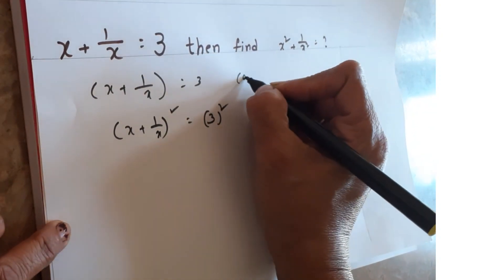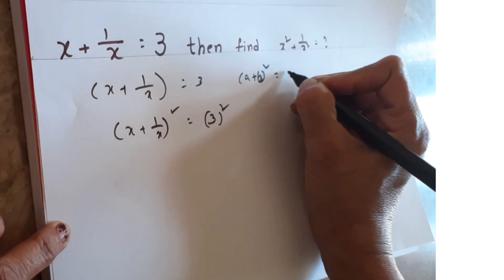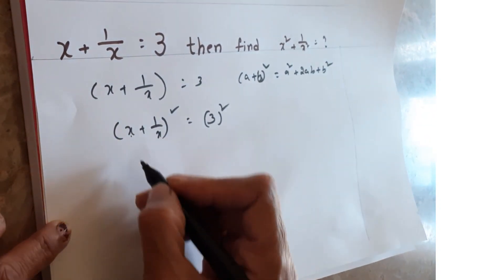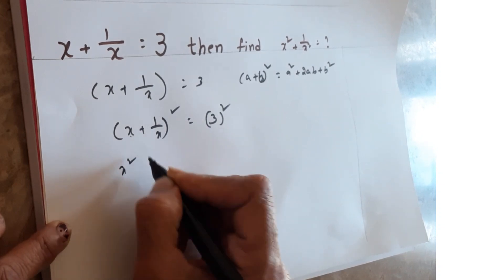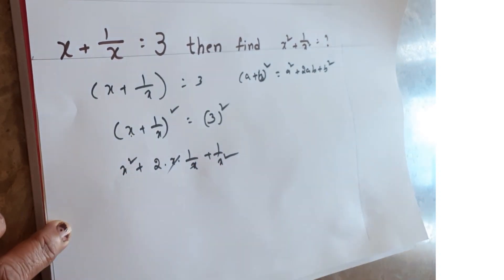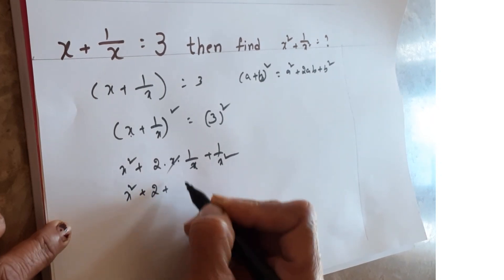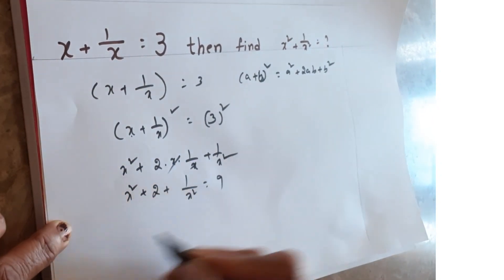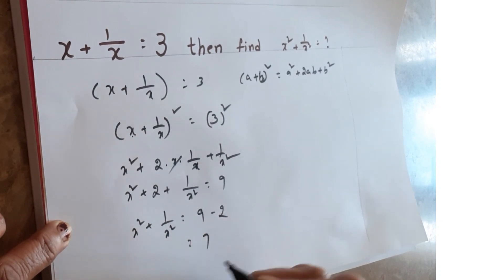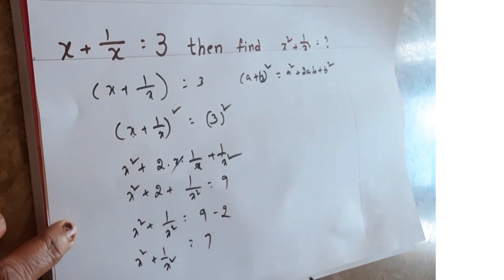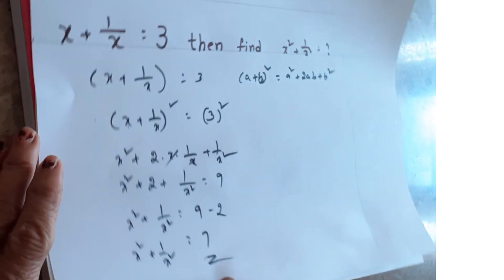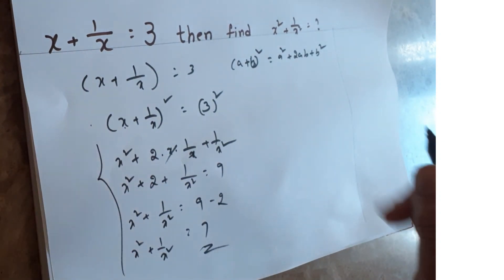Using (a + b)² = a² + 2ab + b², we get x² + 2·x·(1/x) + 1/x² = 9. The x terms cancel, giving x² + 2 + 1/x² = 9. Moving 2 to the other side: x² + 1/x² = 9 − 2 = 7. This is the long method answer. Now I'll tell you the trick to do this within seconds.